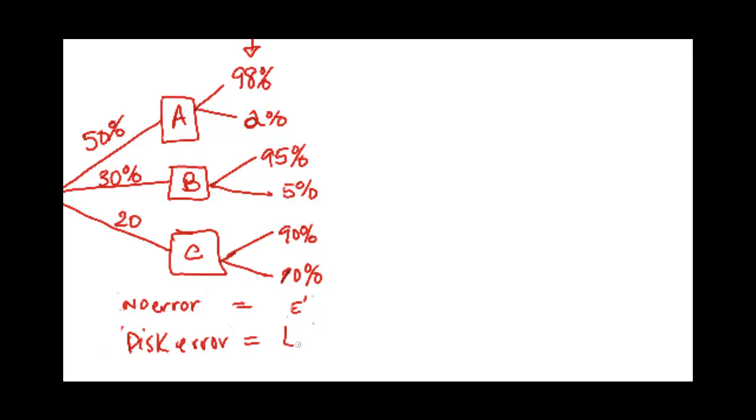All right, so if we're looking at this, that top spot right here, this is actually the probability that there is no error given that it came from company A. That's what this 98% is.